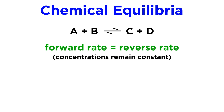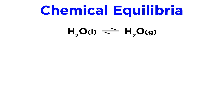It is therefore important to always keep in mind that in a chemical equilibrium the forward and reverse reactions never stop. They simply result in a constant concentration, which gives the illusion of inactivity.